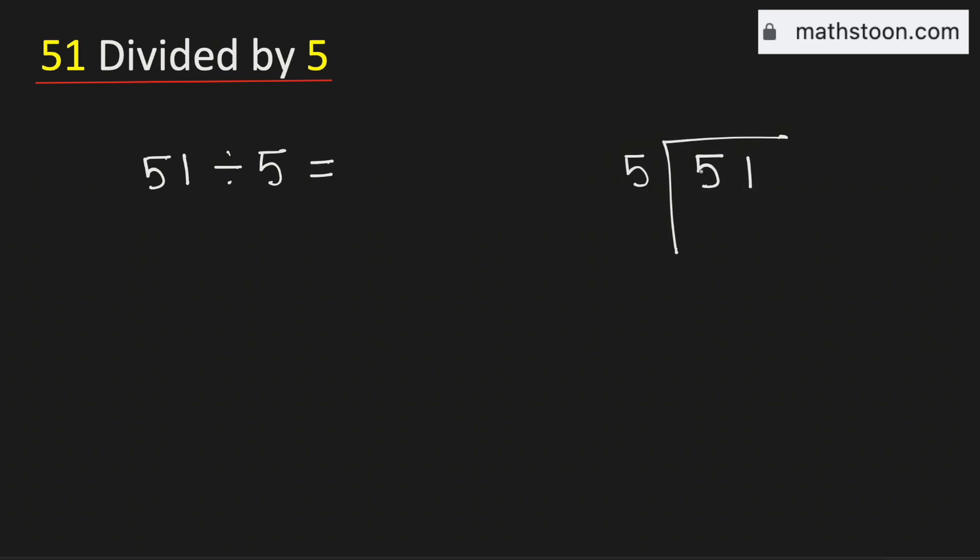Consider the first digit 5. We know that 5 times 1 is 5. Subtract, we get 0.